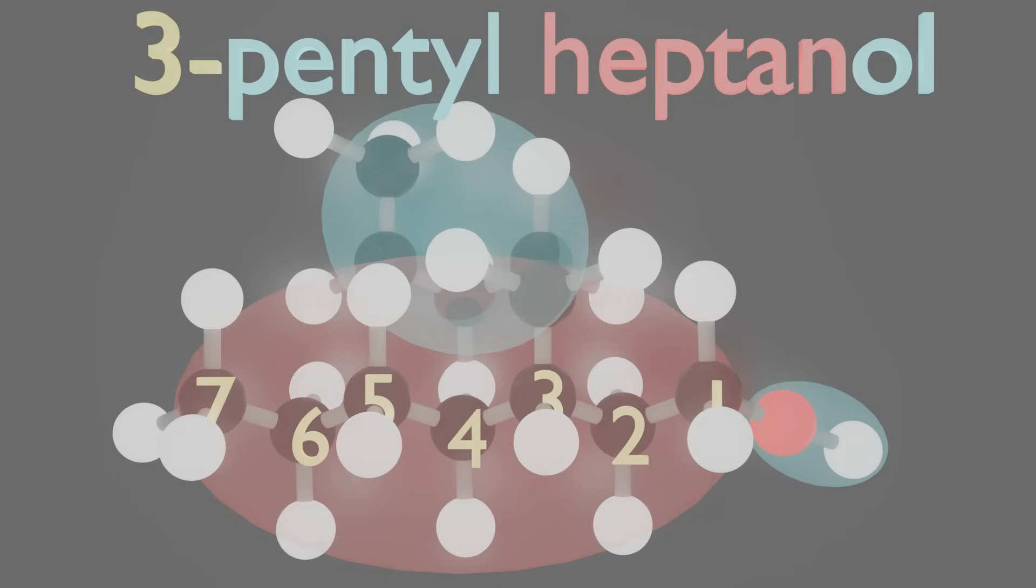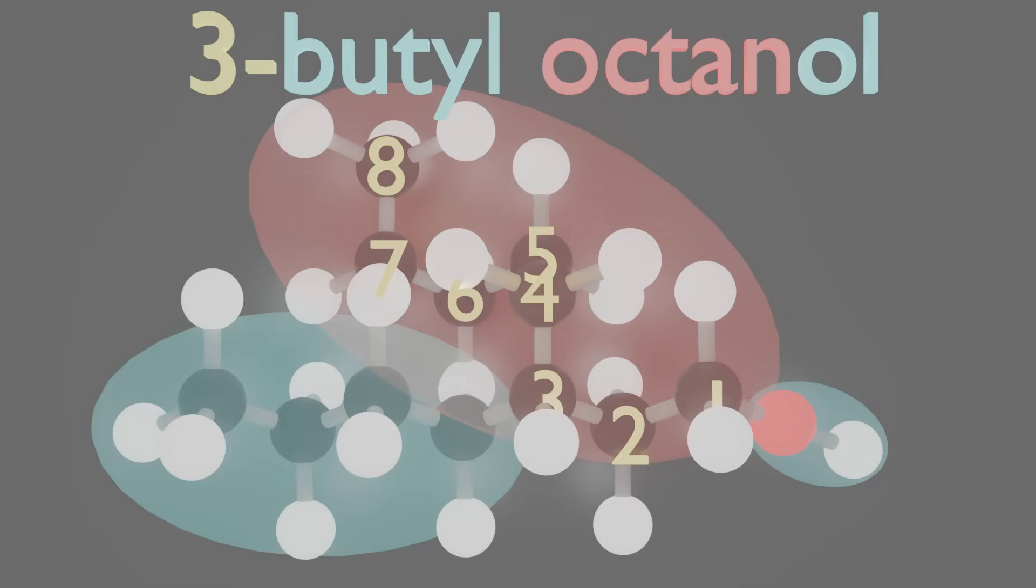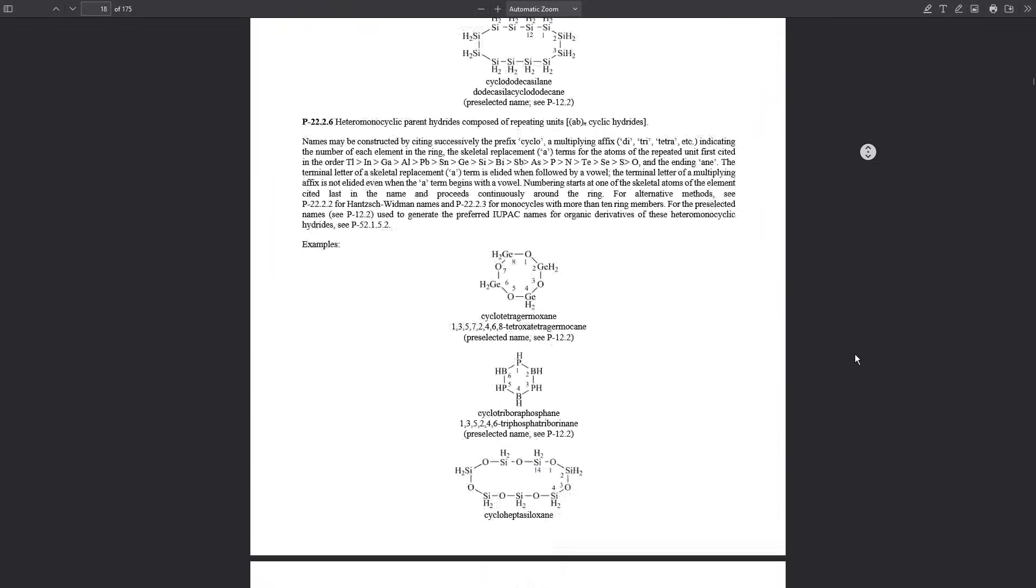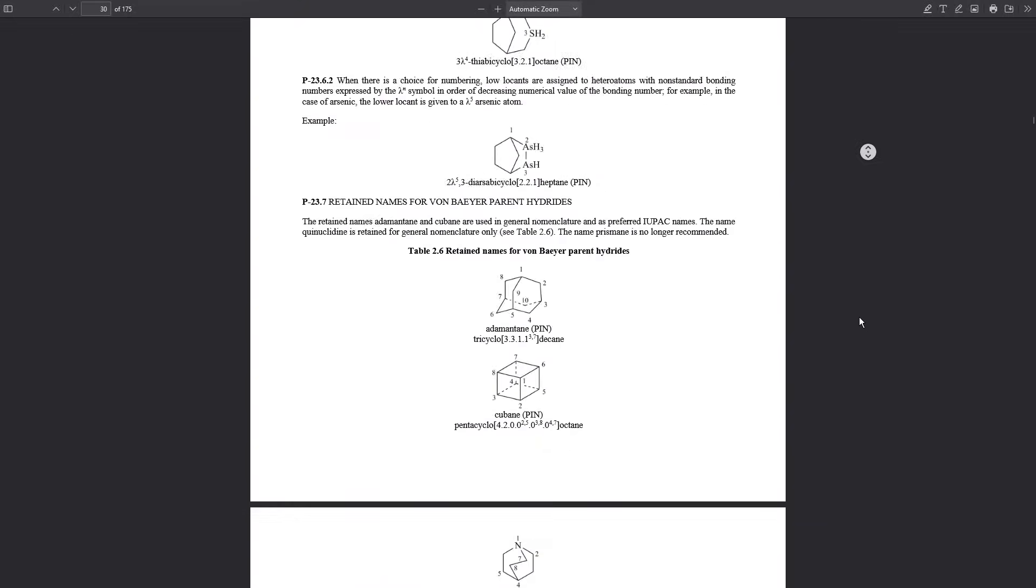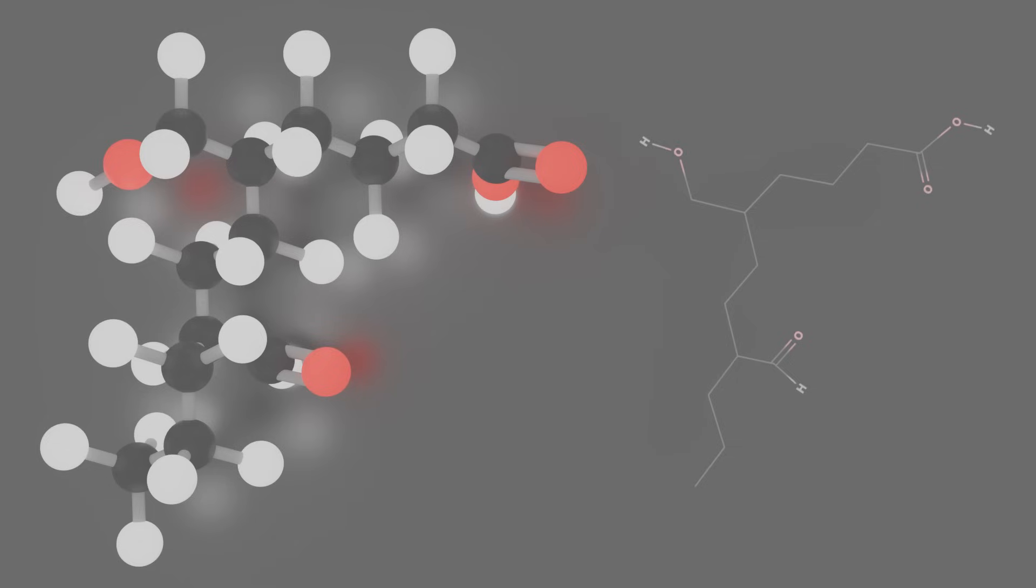That's because for a 3-pentylheptanol, this is no longer the longest chain. This is the longest chain, meaning that now it is 3-butyloctanol, like this. I won't go too much in-depth about how and when to start indexing them, because IUPAC bluebook is available for free, and I don't want this to be just a 3 hour long video about magical runes and every now and then broken up by an occasional game of spot the difference.